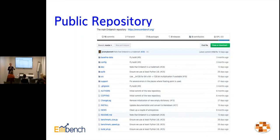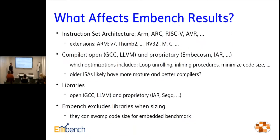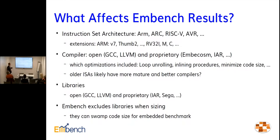We are talking to well-established organizations about having an independent body so you can push your results and have someone trusted say we've validated these results. What affects results? What can benchmarking tell you? The instruction set you use can affect your speed and code size. What compiler you use — GCC or LLVM or one of the proprietary ones such as IAR. Which optimizations are included — loop unrolling, inlining — which can make code fast but very big. It's worth bearing in mind that compilers mature over time, so you might expect the compiler to have more of an effect on ARM, which has been around a long time, than perhaps RISC-V, which is pretty new.